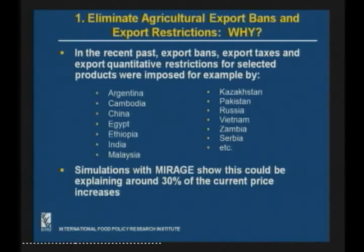On the elimination of export bans, we have seen in the last months that several countries have implemented export bans, export taxes, and export quantitative restrictions for selected products, which create an impact over prices — again creating an impact beyond what fundamentals would indicate. For example, there were taxes on exports of soybeans in Argentina, Cambodia, China, Egypt, Ethiopia, India, Malaysia, Kazakhstan, Pakistan, Russia, Vietnam, Zambia, and Serbia. As a result of those bans, there is a constraint over the supply of the product being traded, and that creates more pressure over the markets, increasing prices.